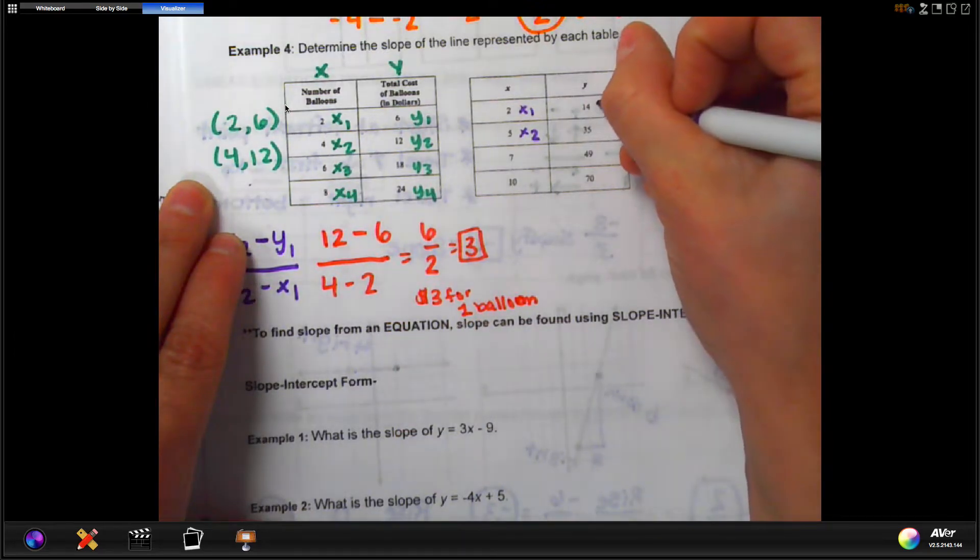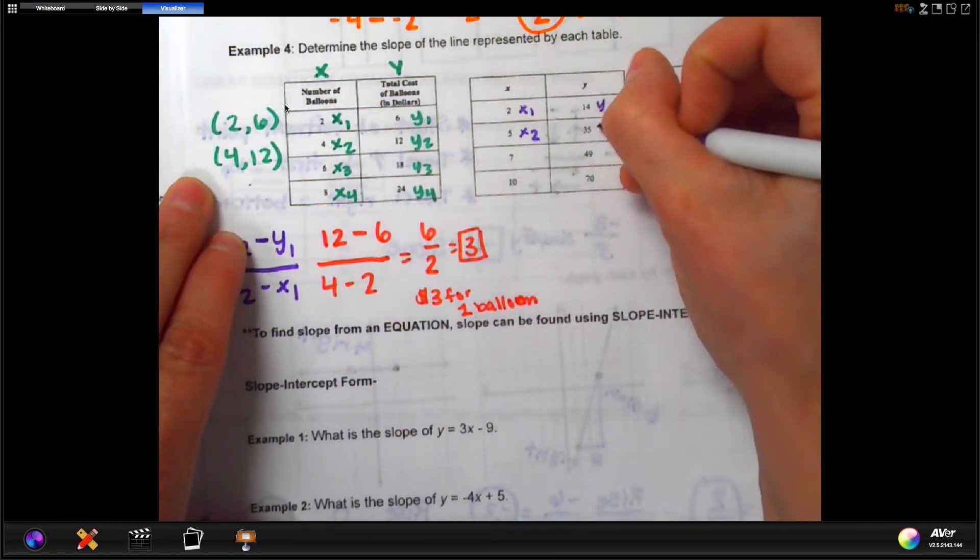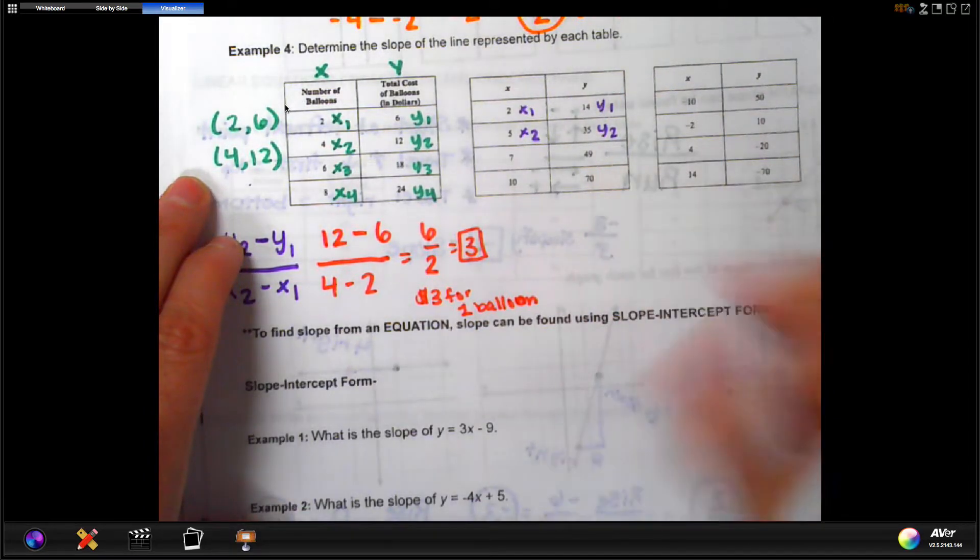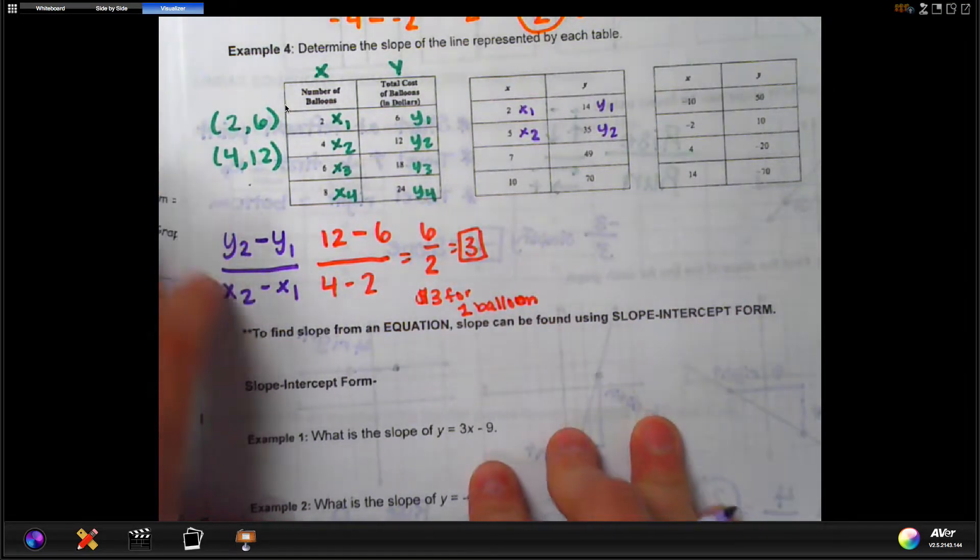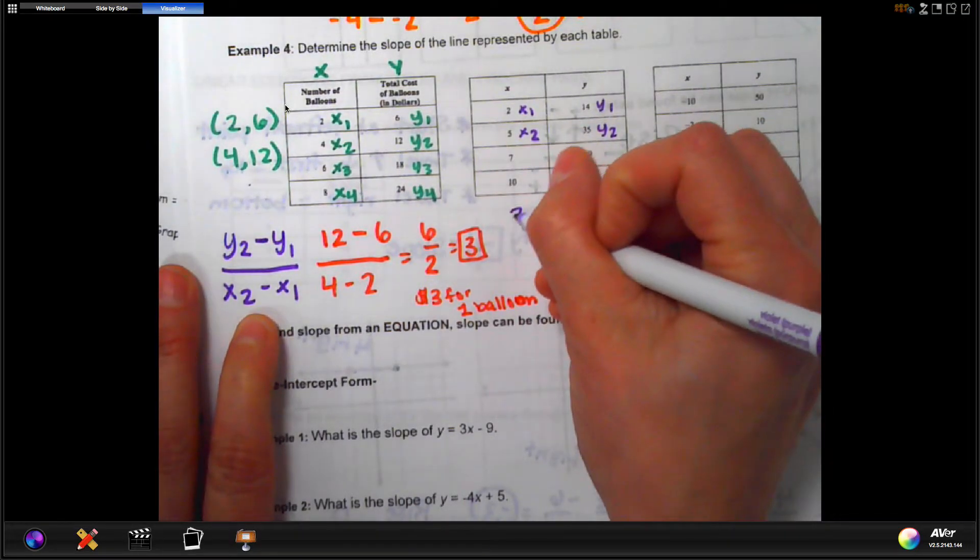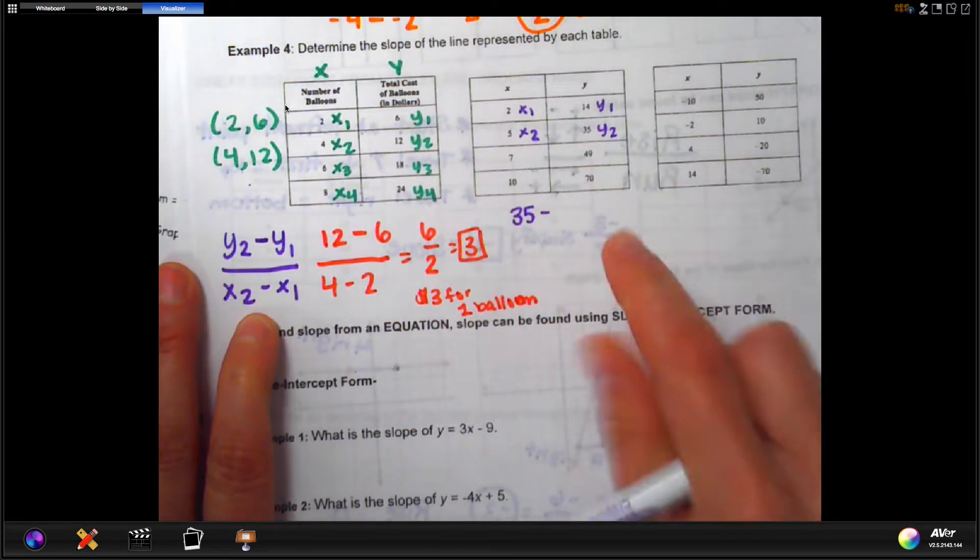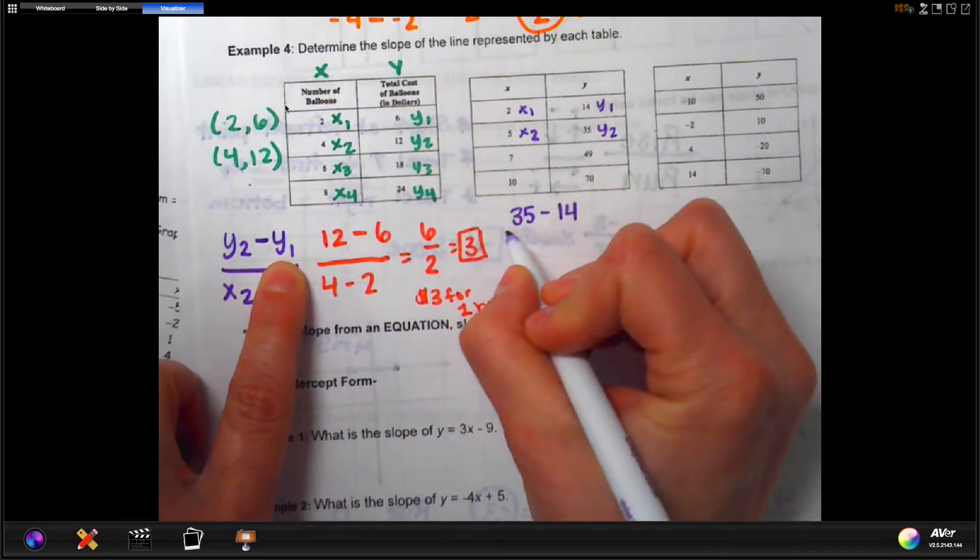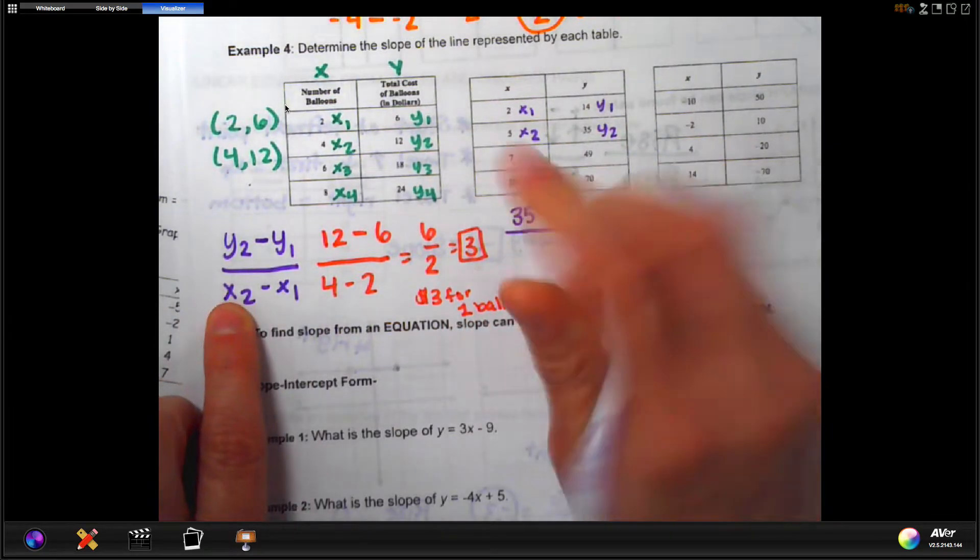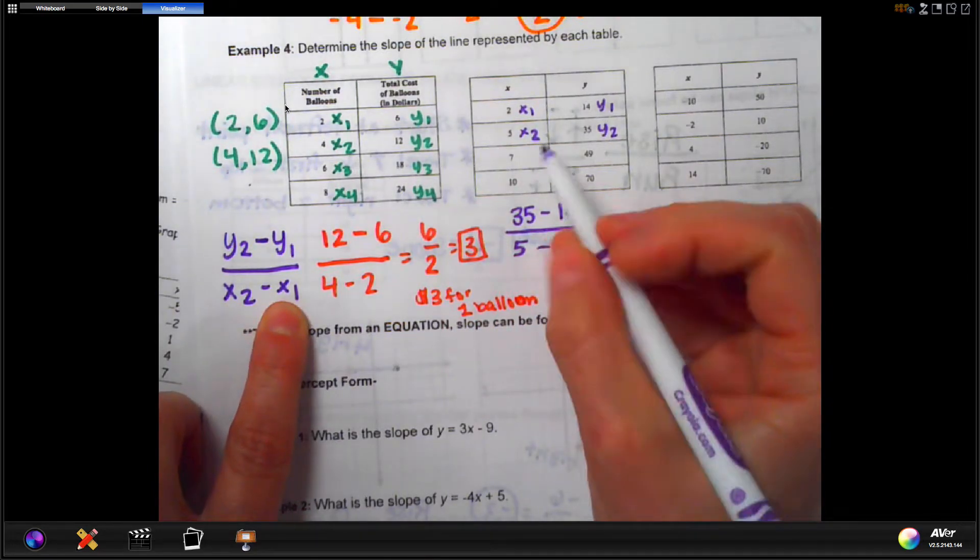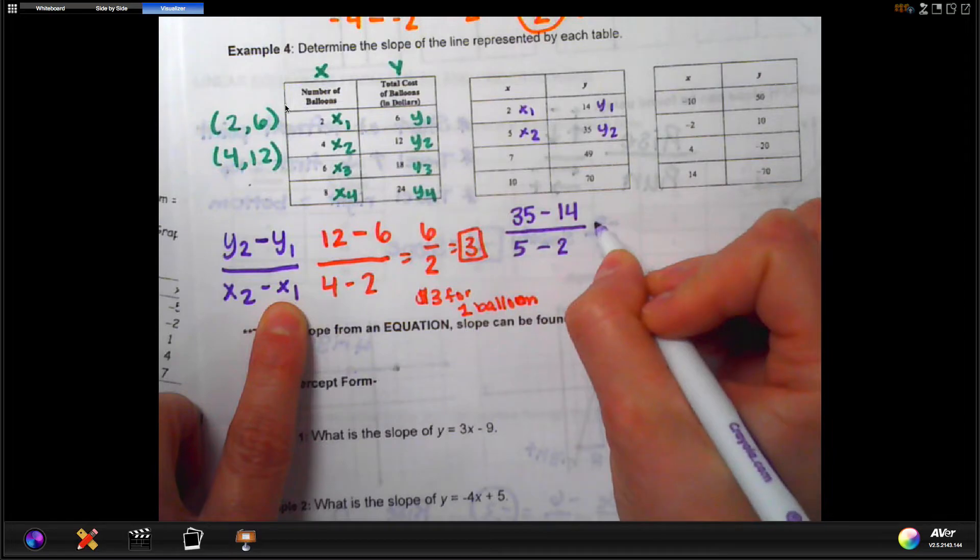So y values, y1 is 14, y2 is 35, 49 would be y3, 70 would be y4. Okay, but using the formula that we have for slope, we'll start with our y2. So y2, in this case, would be 35, minus y1 would be 14. And then over x2 is 5, minus, it's always minus here, x1 would be 2.